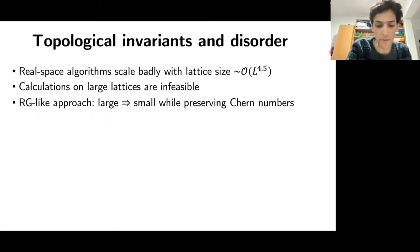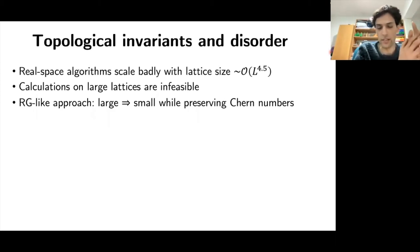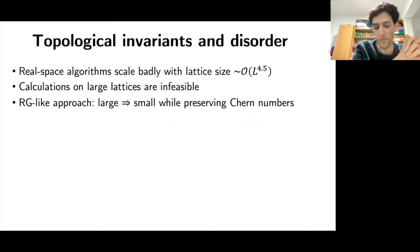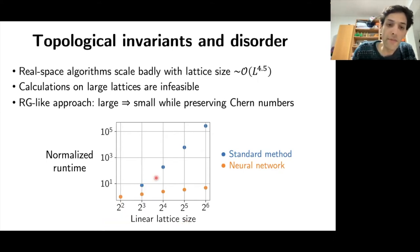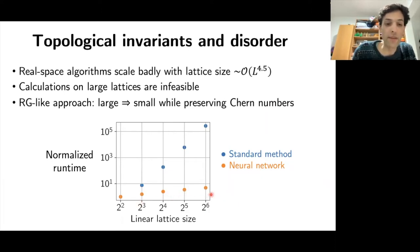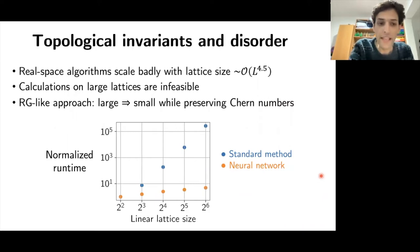Our approach uses something like an RG, because in RG you take a large problem and transform it into a small problem while preserving some property of interest — in our case the Chern number. Here is the end result: in blue you see the standard method, which scales with a large power law of system size, while our neural network approach in orange is actually sublinear — extremely fast in absolute terms and especially in how it scales.